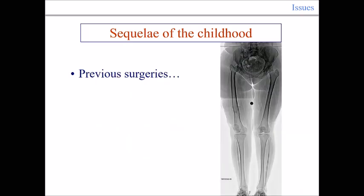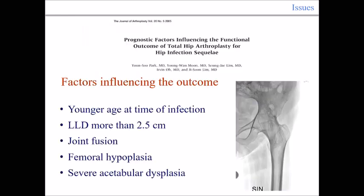Some of these prior surgeries can have really made the situation much more difficult. For example, there is an old type of treatment where they lengthened the femur during the young age, and now you have to face a longer femur. This longer femur needs to be restored in terms of anatomy, and you have to manage this type of situation.